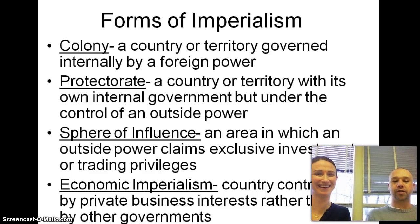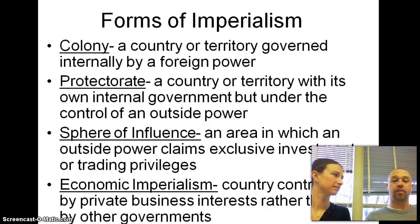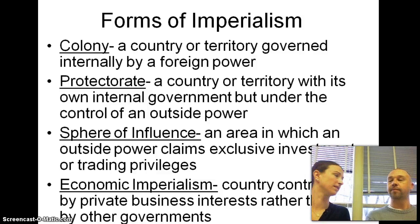A couple more definitions — forms of imperialism. We have a colony, where a country or territory is governed internally by a foreign power. Think of the British and their 13 colonies here in America — the British king was in charge of the 13 colonies. That's like the direct rule we were just talking about.